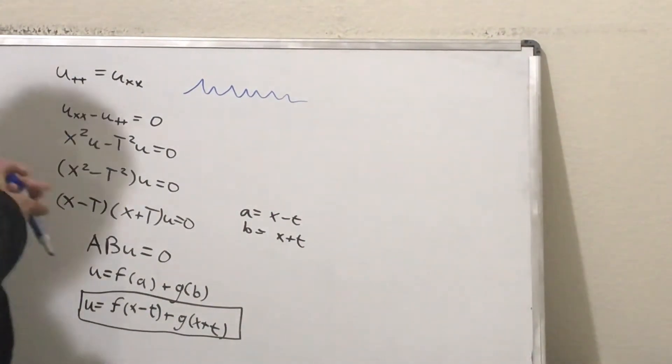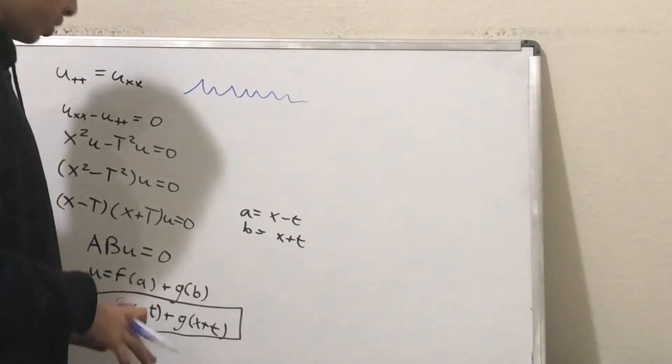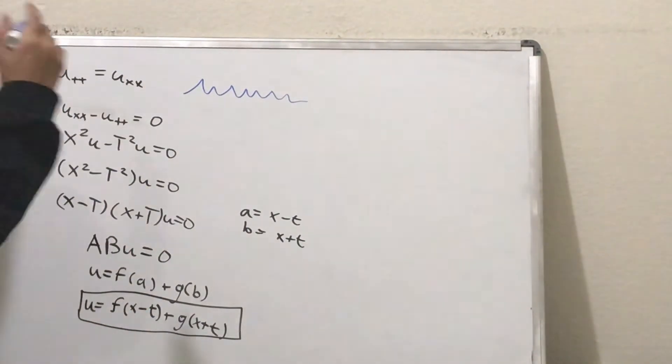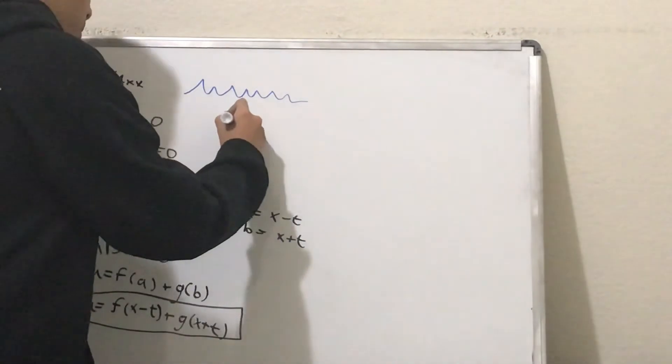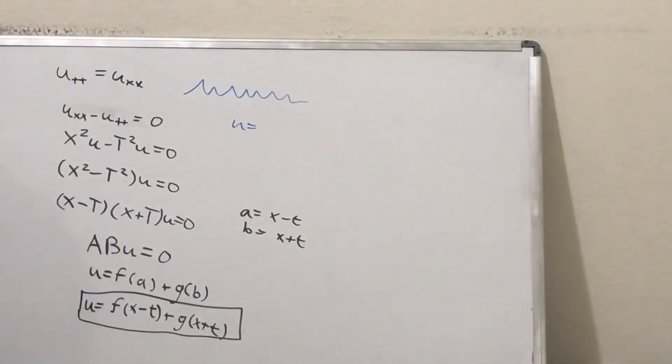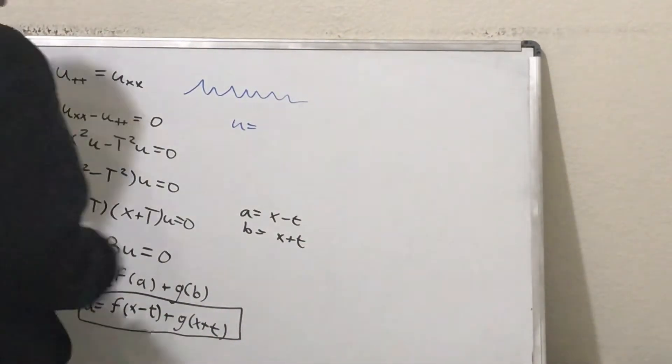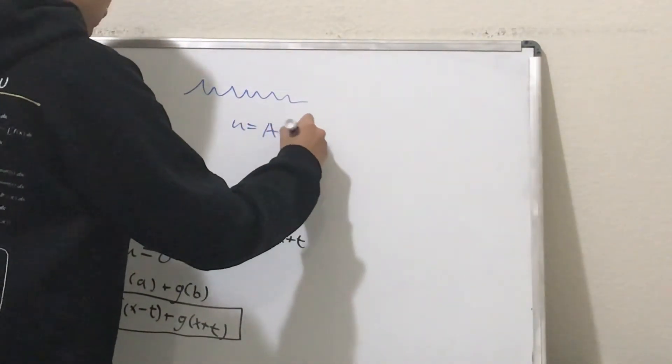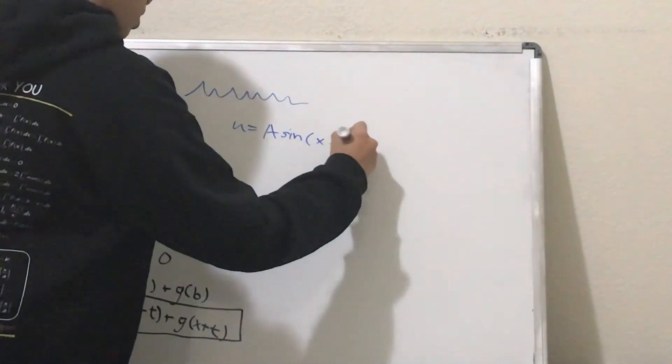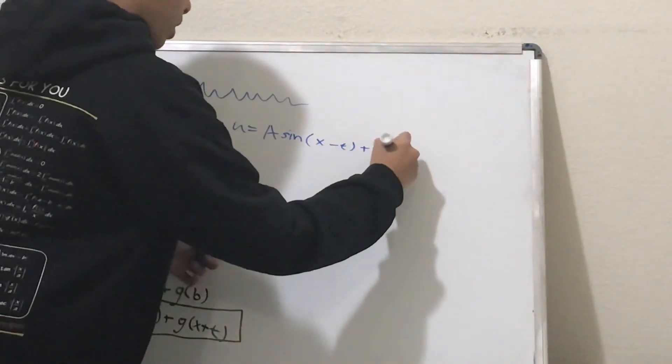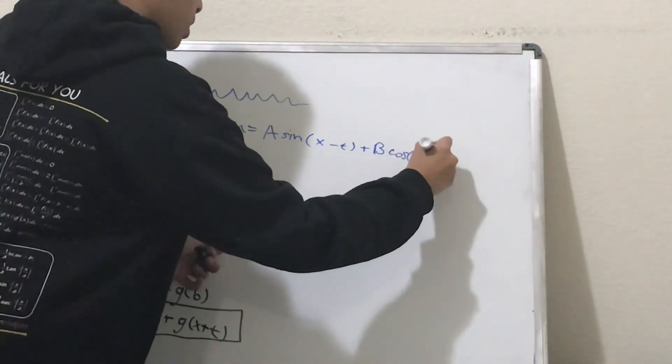And one very useful solution for the wave equation is the harmonic solution. So, if we take f and g to be sines and cosines, you could take a sine of x minus t plus b cosine of x plus t.